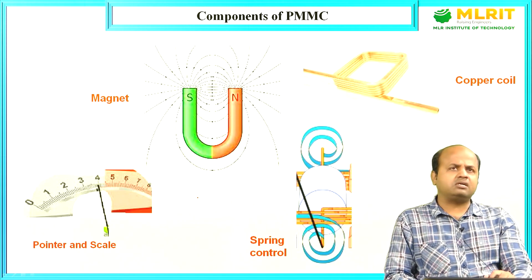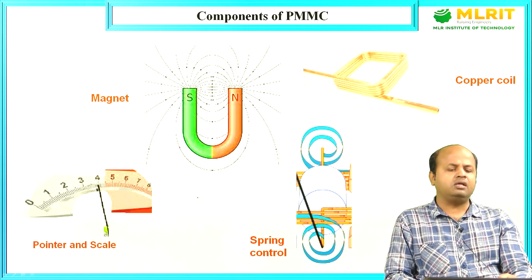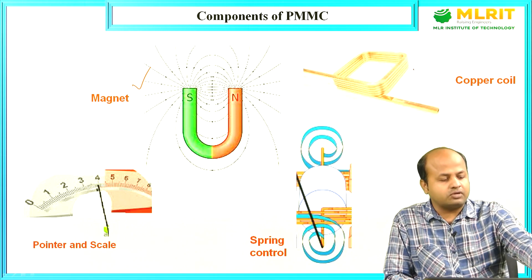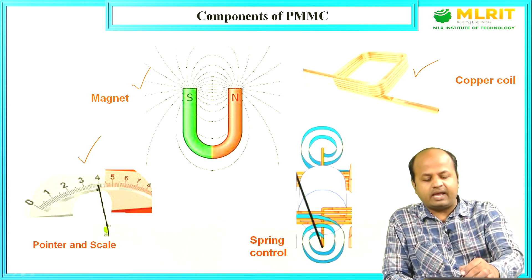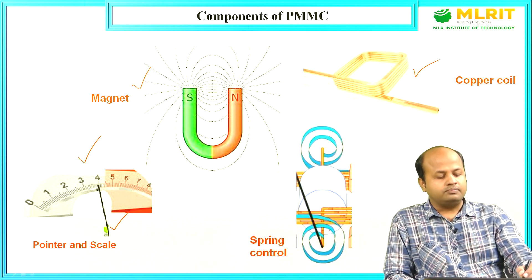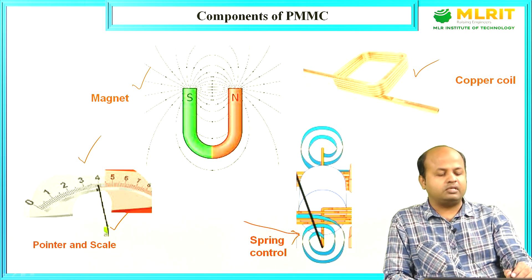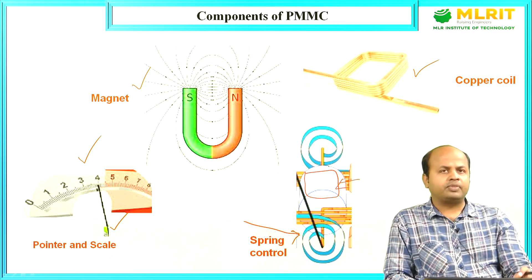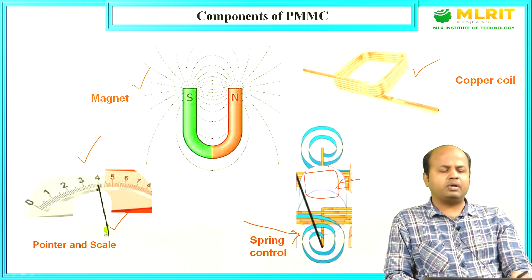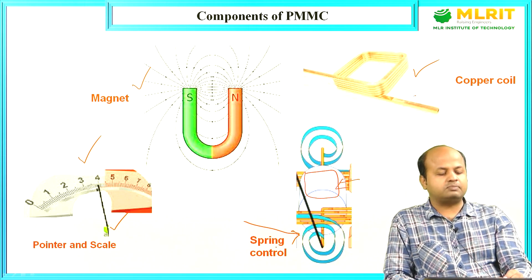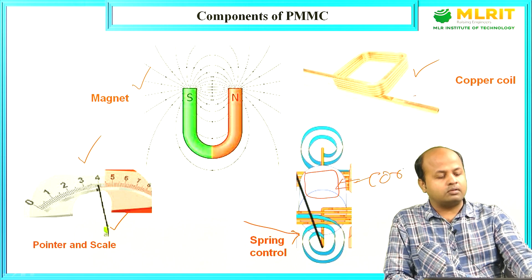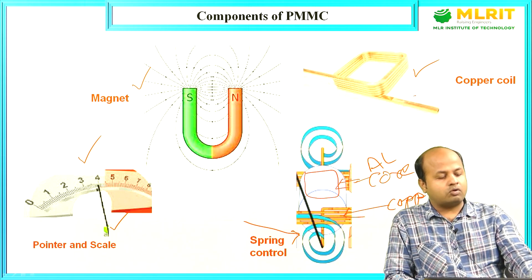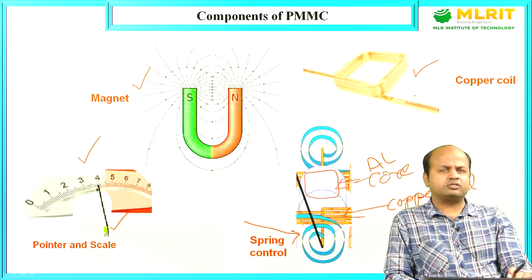What are the basic components of PMMC? The basic construction consists of a horseshoe magnet, a copper coil, a scale and pointer, and a spring — which is a very important component. There is also an aluminium frame on which the copper coil is embedded. So basically there are four to five constituents: magnet, copper coil, pointer and scale, spring, and aluminium core.